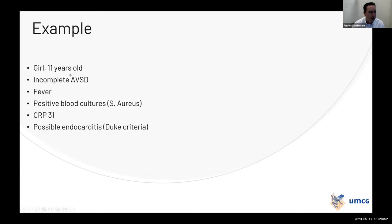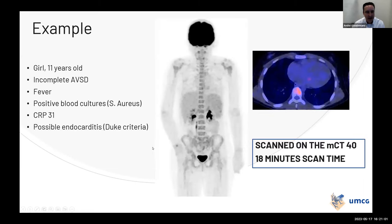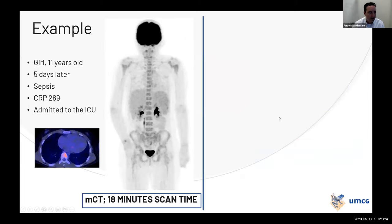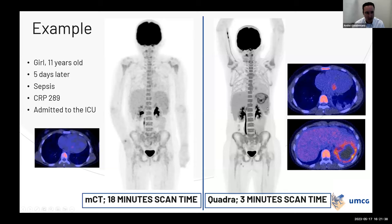The nicest example: an 11-year-old girl with incomplete Kawasaki disease, fever, slightly elevated CRP, and possible endocarditis. The MCT scan — conventional Biograph PET-CT — required 18 minutes under sedation and showed only very slight uptake in the heart region, insufficient to diagnose endocarditis. Five days later she was admitted to the ICU with sepsis and CRP of almost 300. We had just installed the Quadra. The Quadra scan showed endocarditis and a subvalvular abscess — which of course developed in those five days — but the image quality difference is remarkable: 18 minutes under sedation versus three minutes. This is truly a game changer for imaging children.